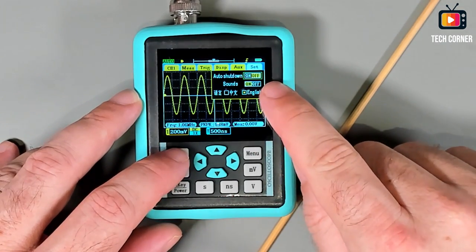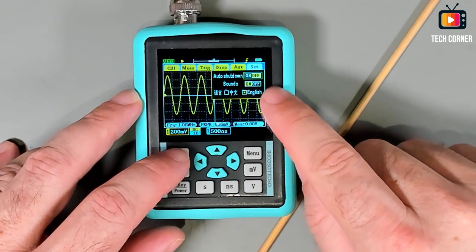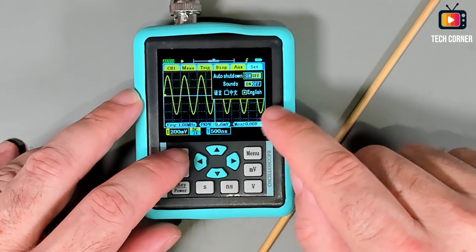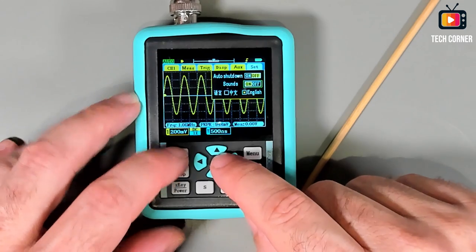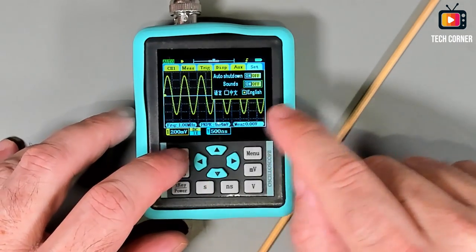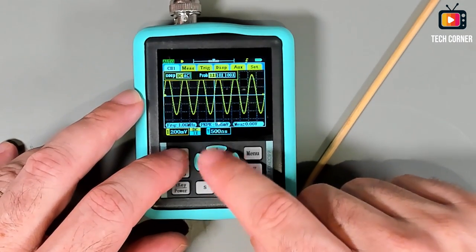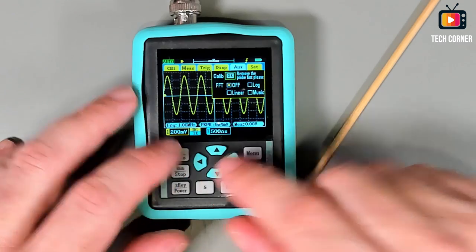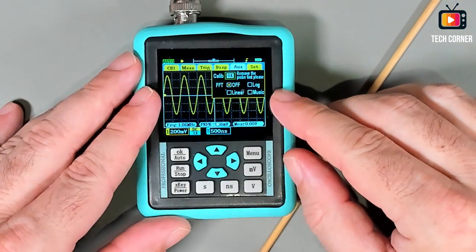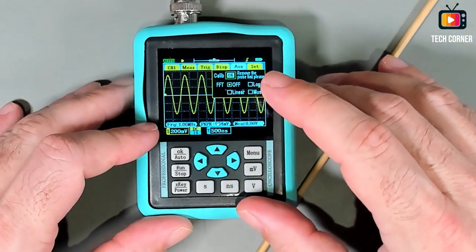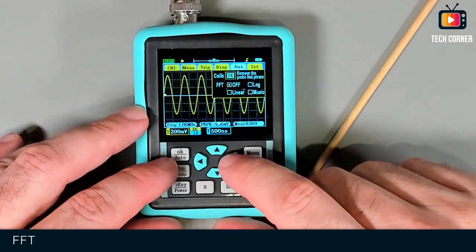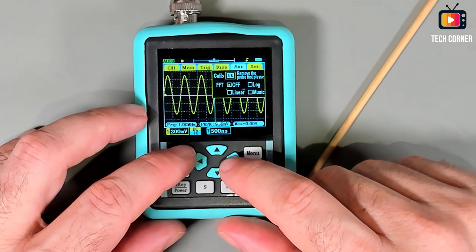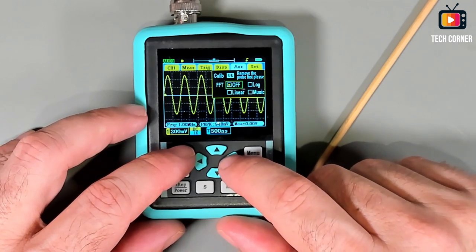Finally let's go to the sets menu, the last one. You have the auto shutdown option, the sound which you can take off, English and Chinese which is normal on these small oscilloscopes. And this is something awesome that this oscilloscope also has: it's the FFT function. That's right, you heard. This has an FFT in it.